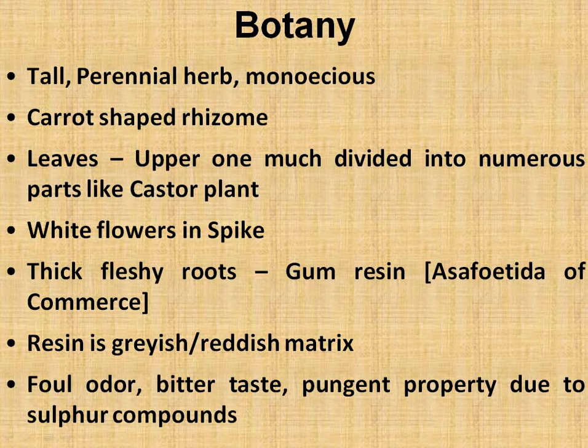The upper leaves are much divided into numerous parts, just like the castor plant — like the leaves of Ricinus communis that you may have seen. The inflorescence on this plant is a spike-type, similar to the ear of wheat, with sessile flowers bearing bracts — this is a type of racemose inflorescence. White crunk-colored flowers appear in the spike inflorescence. The plant has thick fleshy roots, and from the gum resin, the asafoetida of commerce is obtained.